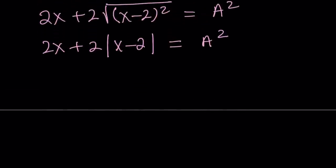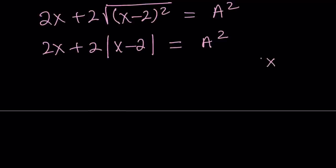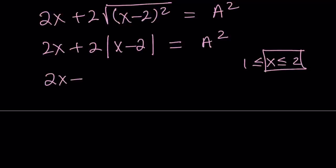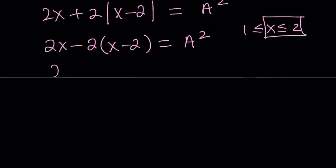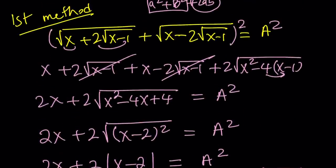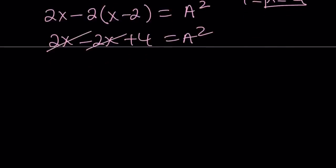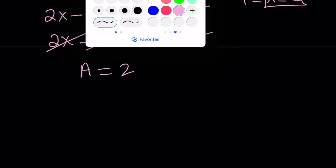Now, consider the fact that x is less than or equal to 2 — because, remember, x is between 1 and 2. So x minus 2 is going to be a negative or non-positive quantity. So its absolute value is supposed to be its opposite. By the definition of absolute value, this is going to have a negative sign. So it's going to be 2x minus 2 times (x minus 2) equals a². When we go ahead and distribute this, we're going to end up with something nice. This is going to be 2x minus 2x plus 4 equals a². Notice that a is the sum of two radicals, therefore it is positive. So we get a² equals 4, and a equals 2 is going to be the final result.